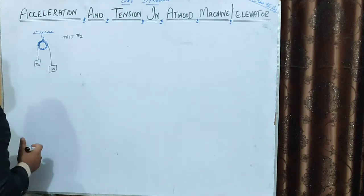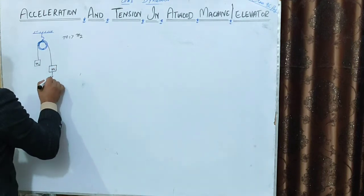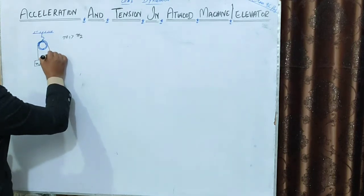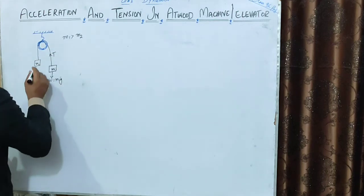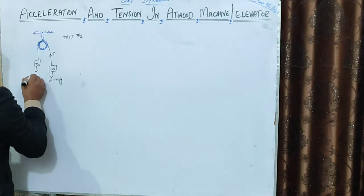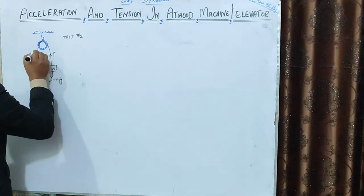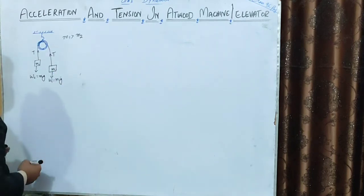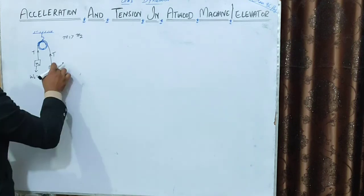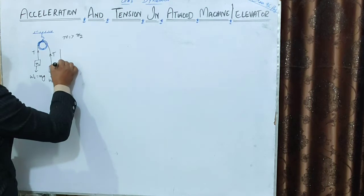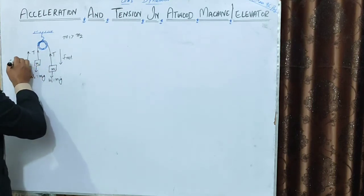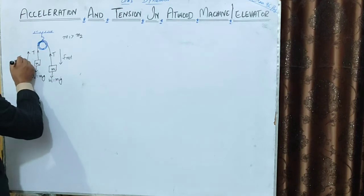Now, for mass m1: its weight W1 acts downward, equal to m1g, and tension T acts upward along the string. For mass m2: its weight W2 acts downward, equal to m2g, and tension T also acts upward. Since both masses are attached to the same string, the tension T is the same throughout. The net force on m1 is downward, so its motion is downward, while m2 moves upward.